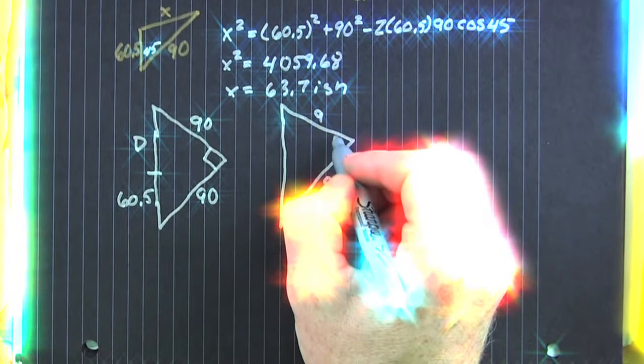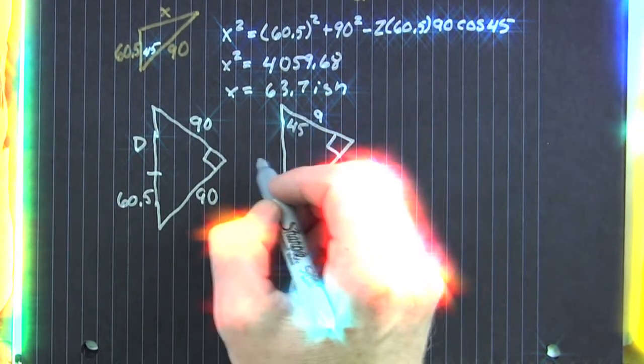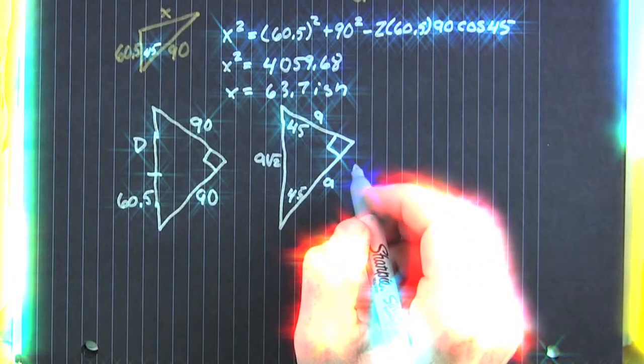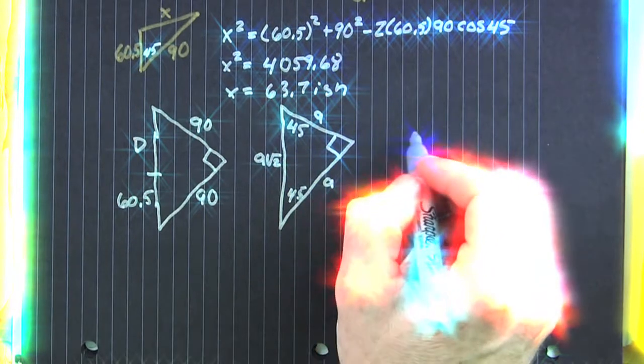D, and we refer to a 45-45-90 triangle. Why not make it easy? That says that the sides are A, then the hypotenuse is going to be A root 2.